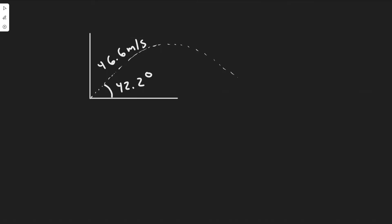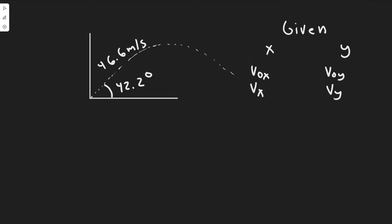First, let's draw what's going on — the projectile launched at 42.2 degrees above the horizontal with an initial velocity of 46.6 meters per second. When solving two-dimensional kinematic problems, I always write out the given values separated into the x-direction and y-direction, listing each variable: initial velocity, final velocity, acceleration, displacement, and time for each direction.